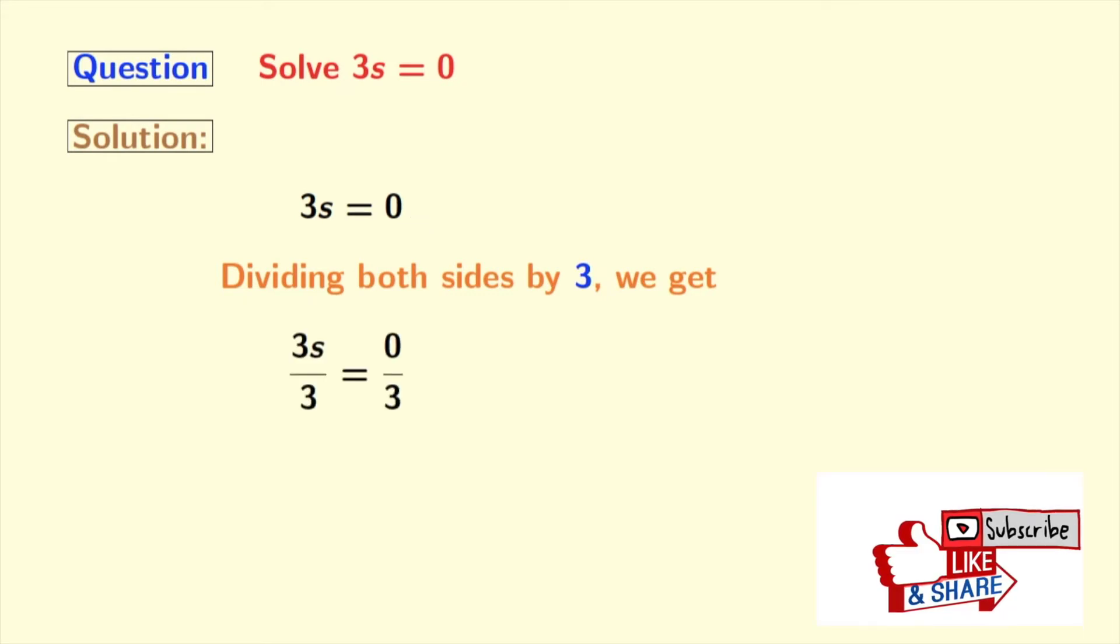Doing so, we get 3s divided by 3 equals 0 divided by 3. Now in the left hand side, 3 gets cancelled and we have s, and in the right hand side we have 0 divided by 3.